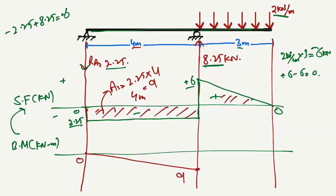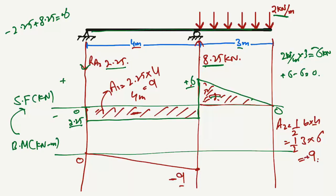For the second portion, the shear force diagram is a triangle. The area A2 = ½ × base × height = ½ × 3 × 6 = 9 kN·m. The first area was −9 and the second is +9, so −9 + 9 = 0. The bending moment returns to zero at the free end, as expected. This completes the bending moment diagram for this beam.